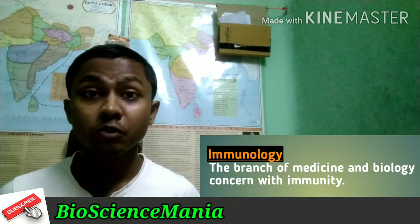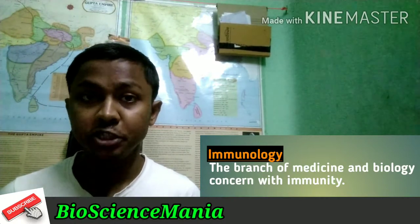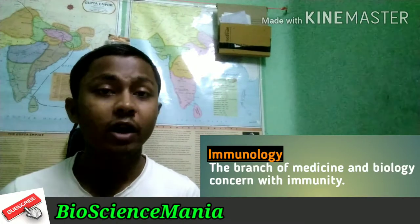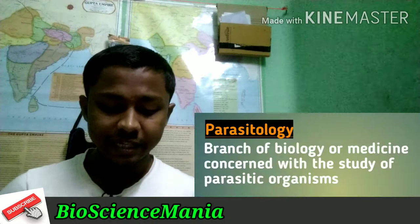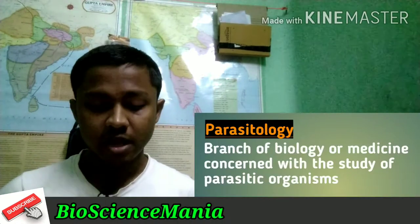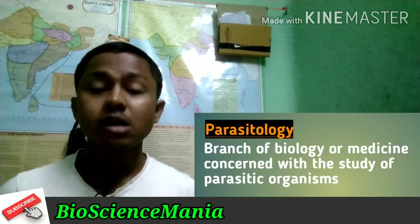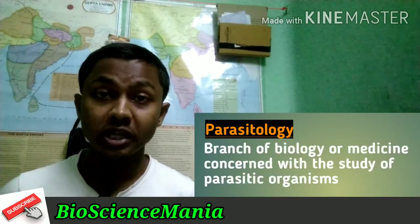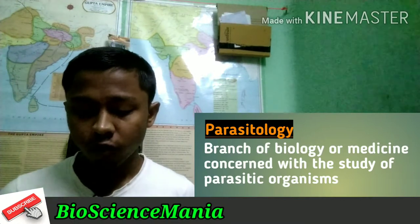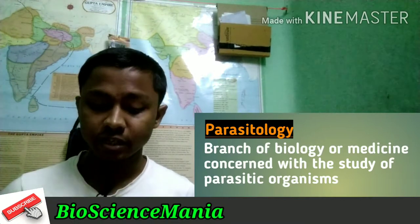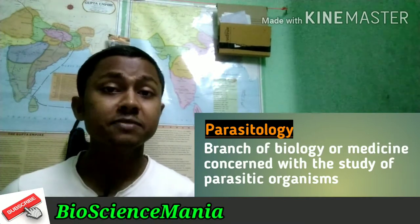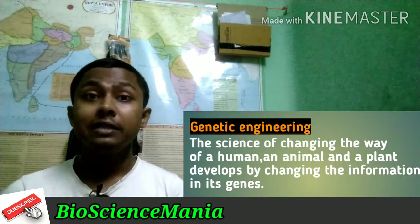Immunology is the branch of medicine and biology concerned with immunity of an organism. Next, parasitology is the branch of biology or medicine concerned with the study of parasitic organisms, and this is known as parasitology.